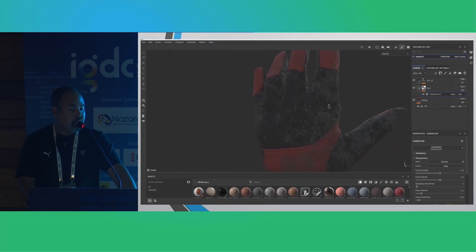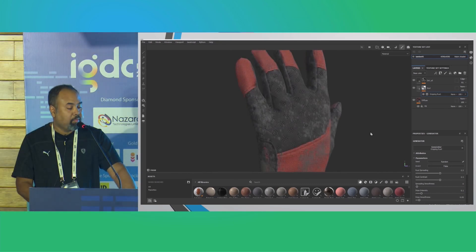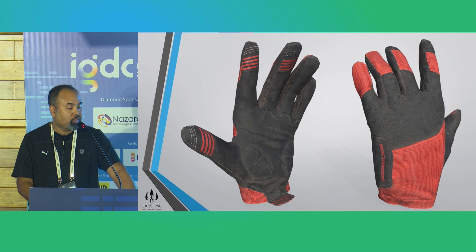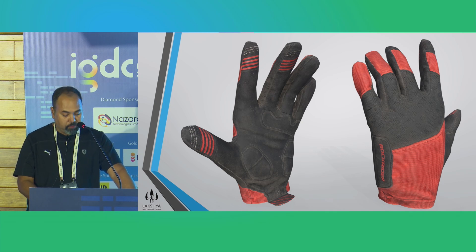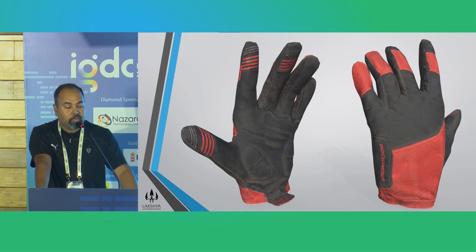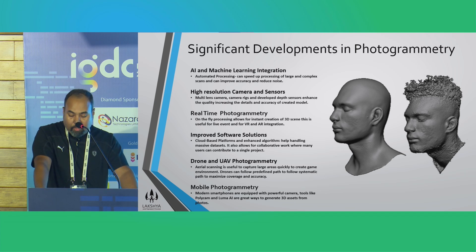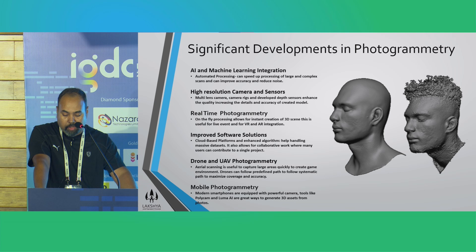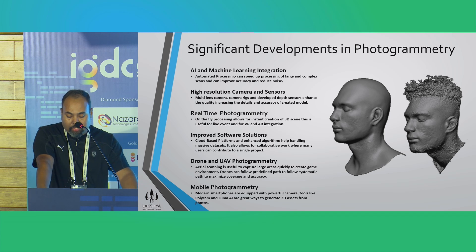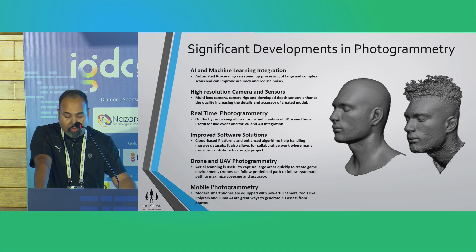That is how you get started with photogrammetry. The dirt looks a little too much, so I polished it a little further — this is how it finally shaped up. Now, regarding significant developments contributing to photogrammetry: recent developments in AI and machine learning have helped to process large and complex scenes and reduce noise — remember we had to clean noise in ZBrush and in Photoshop.